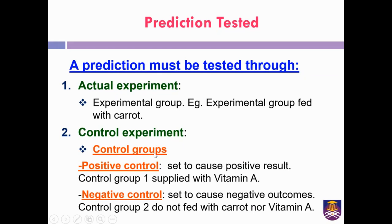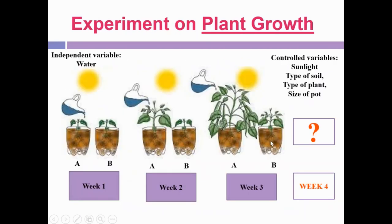There are three types of variables: independent, dependent, and control variables. Based on the group and the variable, a prediction test will be conducted through the actual experiment and the control experiment. Control groups have two types: positive control groups, which are set to cause a positive result, and negative control groups, which are set to cause negative outcomes.